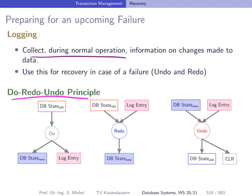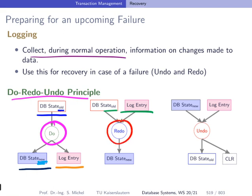The do-redo-undo principle has three cases. First, the do case: we have an old database state, then some update, change, insert, or delete comes in, which transfers this old state into a new state, and while doing this we create log entries. If the database system crashes and the new state is lost because it happened only in memory, after restart we have the old state and the log entries. In the redo phase, we apply the log information to the old state in order to obtain the new state.